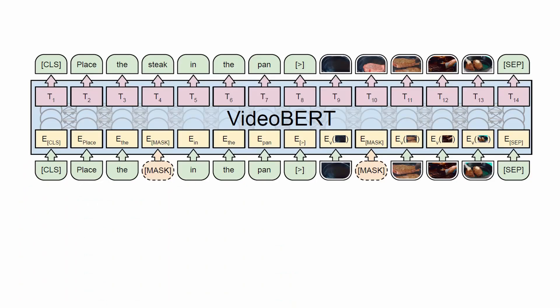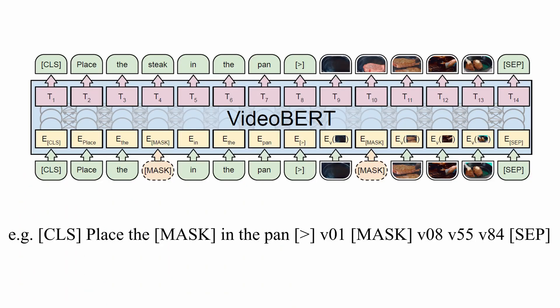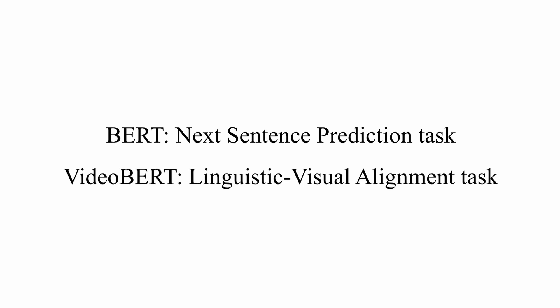Now that we have the visual and linguistic tokens, we can see the adjustments that the authors of Video BERT have done compared to BERT. They combine the linguistic sentence with the visual sentence by concatenating them. Visual tokens like VO1 and VO8 are used, and a special token declares the beginning of the video sentence. A masked token represents the masked video or language token to predict. Video BERT also includes a task called linguistic-visual alignment, which predicts whether the linguistic sentence is temporally aligned with the visual one.